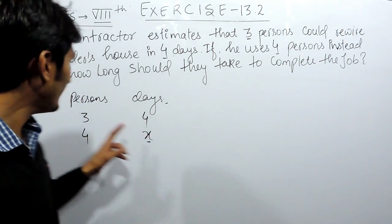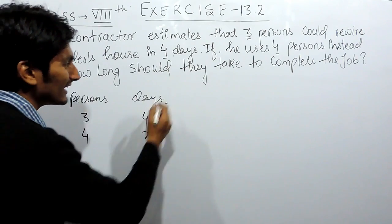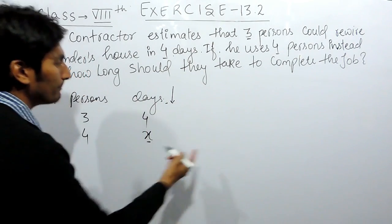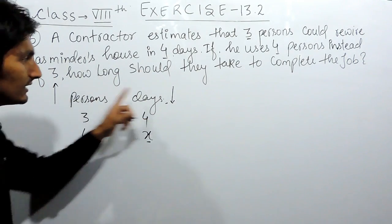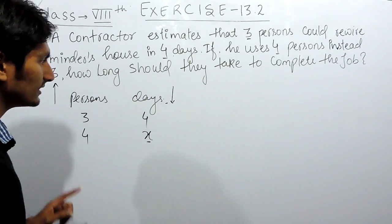So, when I increase the number of persons, they will take less days to do the same piece of work. So obviously, this is inverse proportion because when persons are increasing, the number of days is decreasing.